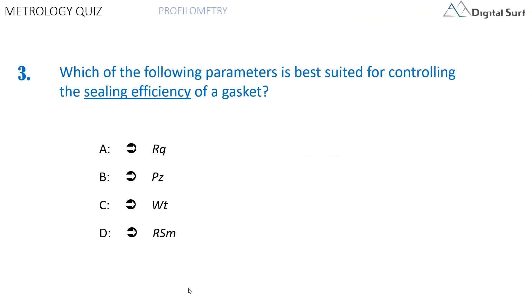Question number three. Which of the following parameters is best suited for controlling the sealing efficiency of a gasket? Answer A: RQ. Answer B: PZ. Answer C: WT. Answer D: RSM. One correct answer only.